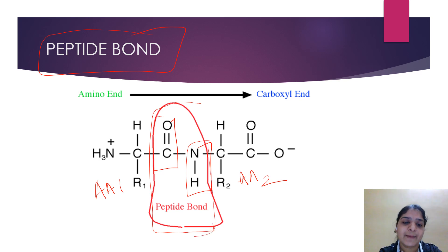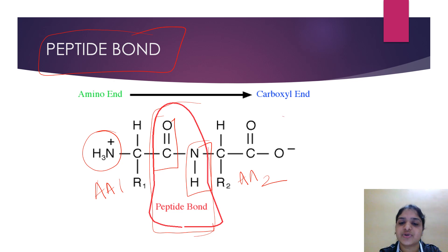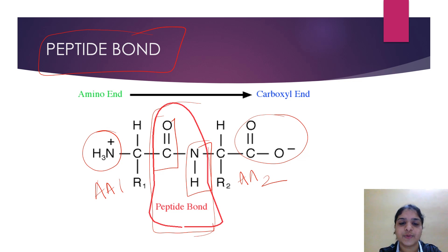By convention, the free amino end — the amino terminal — is written on the left side, and the free carboxyl terminal is written on the right side. This peptide bond is formed by the combination of two amino acids with removal of one water molecule, and it has an amino and a carboxyl end.